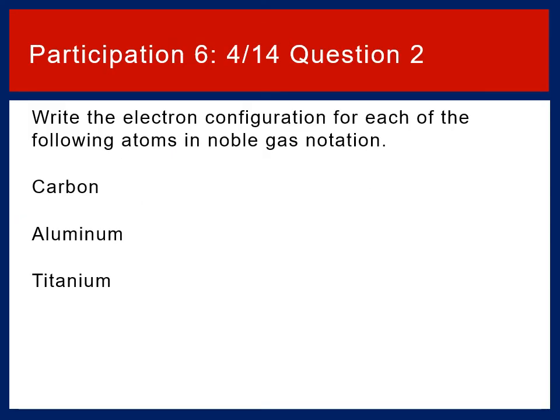All right, saw some examples from me. Now, I would like for you to write the electron configuration for each of the following atoms in noble gas notation. Hopefully these look, again, familiar, carbon, aluminum, and titanium. So again, the ones you've been doing previously looked at different representations. Now we would like the noble gas notation description of their electron configurations. So that's going to be the second question on participation assignment 6 that is due on April 14th. So there's five questions across these videos. You want to find them and get those answers up by 11:55 p.m. on April 14th.